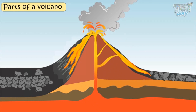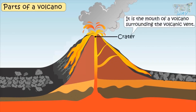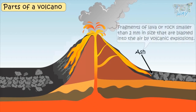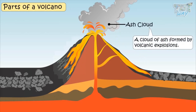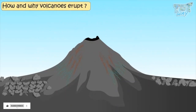The visible opening is called crater — it is the mouth of the volcano, and it surrounds the volcanic vent. Ash is fragments of lava or rock smaller than two millimeters in size that are blasted into the air by volcanic explosions. An ash cloud is a cloud of ash formed by volcanic explosions. Now let's see how and why volcanoes erupt.